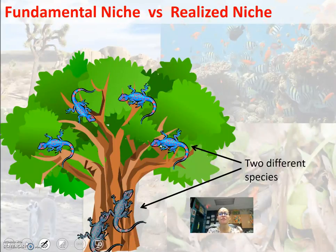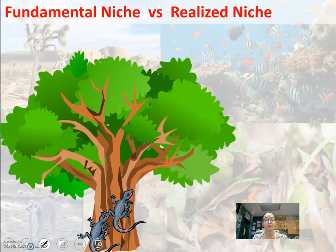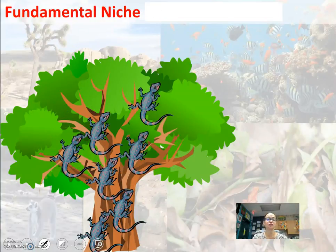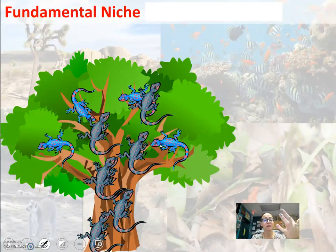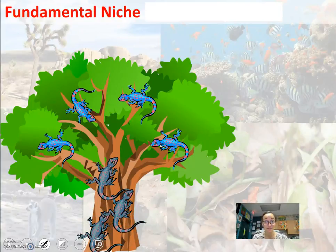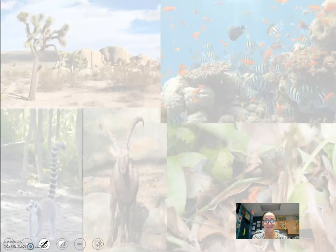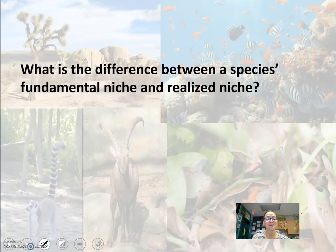We have the fundamental niche versus the realized niche. Here we have two different species living on one tree. If one species was gone, the gray lizard species would cover the entire tree with no competition. However, with competition, it will prefer the trunk of the tree rather than the branches. When you have actual competition, you get a realized niche — it takes into account other populations and how everything interacts together. The difference between fundamental and realized niche is box five.